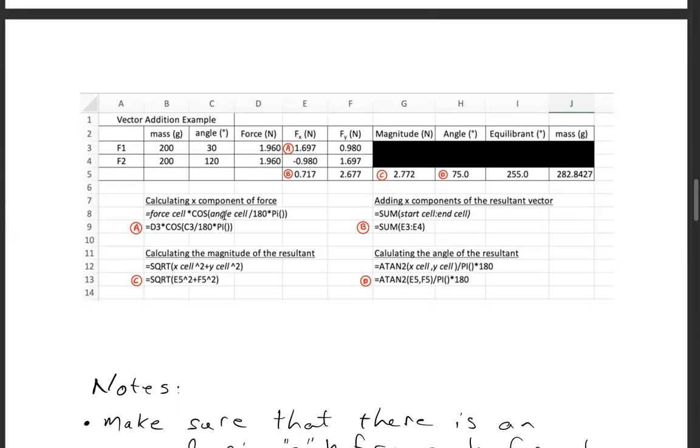So this particular cell A, I have a formula that says equals D3 times cosine C3 divided by 180 times pi. Now you have to have the parentheses around the pi in order to get it correct, and you get 1.697 Newtons.